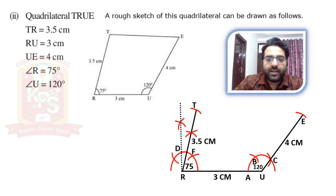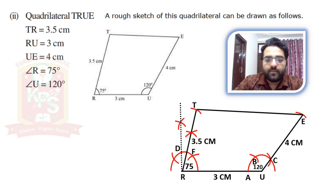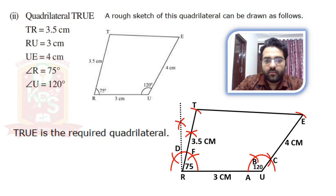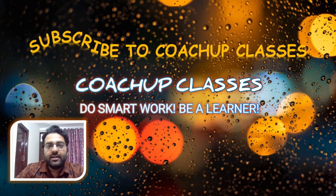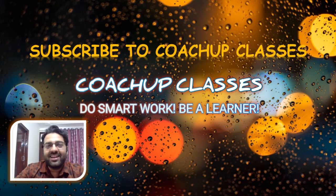Now our final step: join T to E like this. So we get quadrilateral TRUE, which is our required quadrilateral. So that was all about Exercise 4.4. In the next video, we will start with Exercise 4.5. If you liked this video, please do share and subscribe to my channel. Thanks for watching.